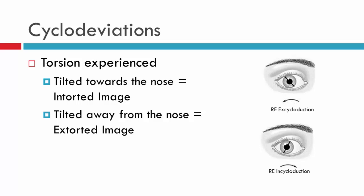Now let's look at this a little bit more visually. What we can see here is a right eye that's encycloducted, and the black line here is depicting that the eye is rotated towards the ear. So the expectation is that if this eye is encycloducted, the image that the patient will see is intorted — it will be opposite to the rotation of the eye. If we take the excycloducted eye, the black line you can see is moving towards the nose for the right eye, and therefore the image that the patient will see will be extorted, the opposite to the rotation of the eye.